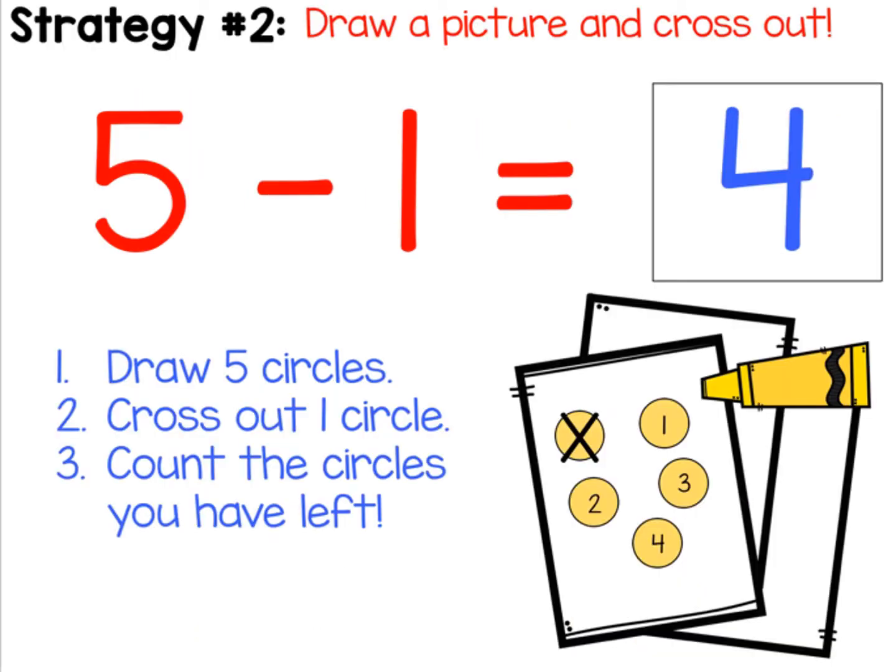Our second subtraction strategy is to draw a picture and cross out. So if you were looking at the number sentence five minus one, you would draw five circles, then cross one out to minus one, and then count how many you have left. This is another great strategy you can use to solve subtraction sentences.